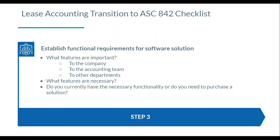A contract may end up in accounting, but we all know it doesn't originate there. It may originate in operations, facilities, legal, or procurement. That doesn't mean those departments are done once the contract is signed — they're probably using manual methods to track and maintain those contracts on a go-forward basis. So coming to the table to evaluate a solution also involves getting those other internal stakeholders involved.